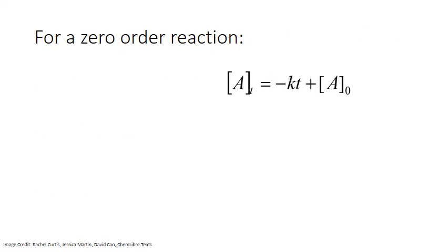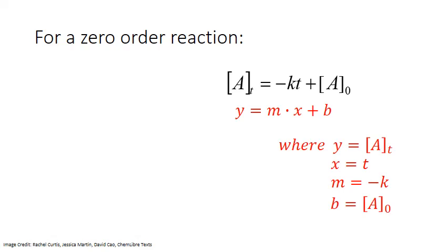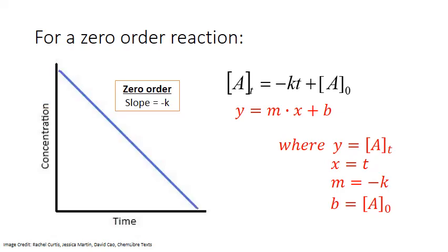The zero-order integrated rate law fits a straight-line relationship, y equals mx plus b, where the y variable is the concentration of the reactant A, x is the time, the slope corresponds to the negative of the rate constant, and the y-intercept is the initial concentration of A at time zero. This means that if we graph concentration versus time, we should always get a straight line for a zero-order relationship.